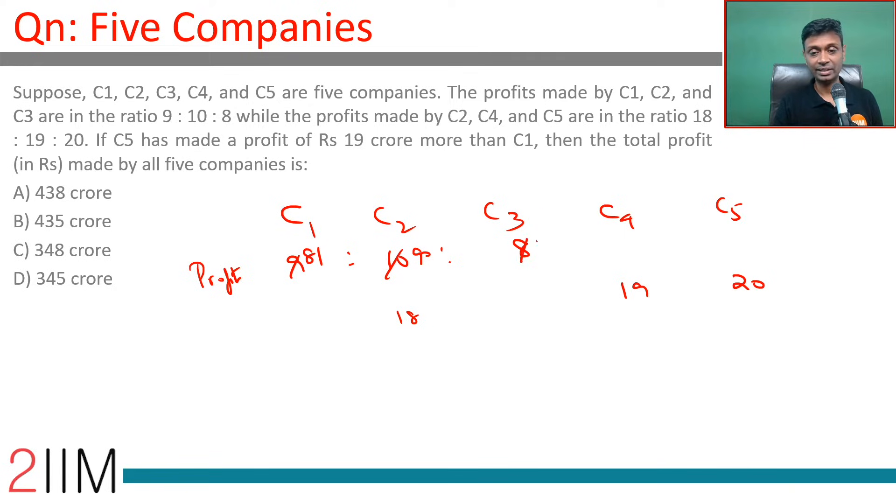81, 90, 72 become 90, 95, 100. So the ratio is 81:90:72:95:100, all in terms of x.